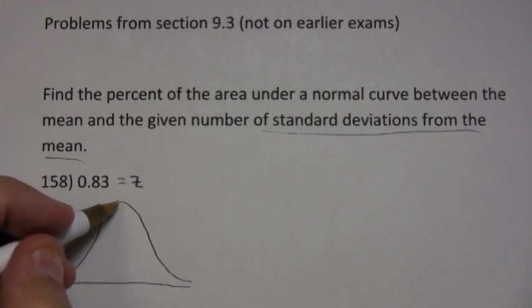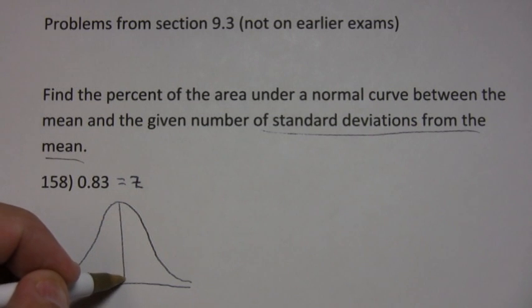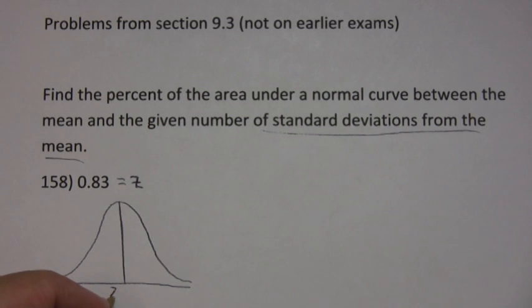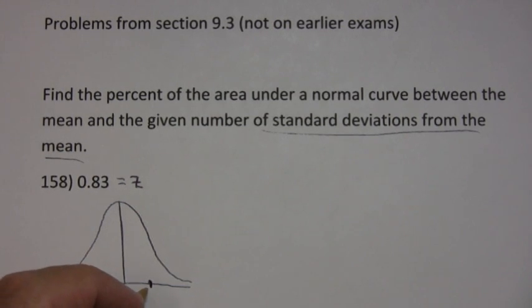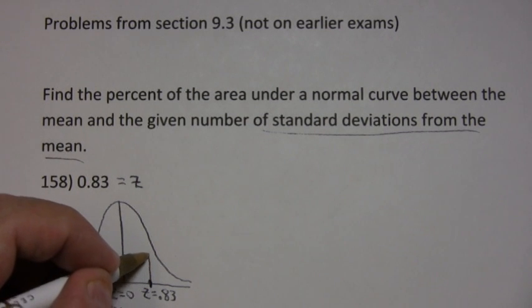So you have a normal curve, and you're measuring standard deviations from the mean. Now, for a standard normal, those Z values, those Z scores, the mean is always 0. That's the mean. So you want it to be 0.83. 0.83, let's say, is here. And we want it to be 0.83, that's to the right, standard deviations from the mean.